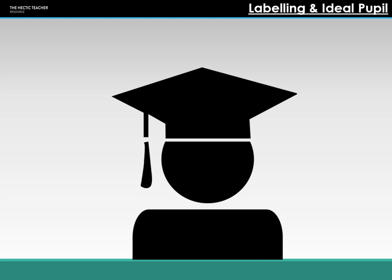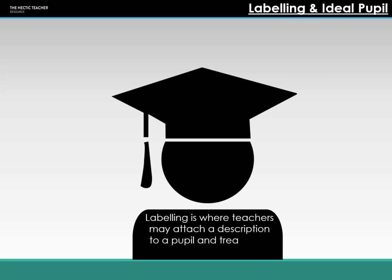There is a negative side to labelling as well, which can lead to students being anti-school. A negative label can be attached, and because of the treatment due to that label, it can lead to negative outcomes such as poor academic achievement, poor behaviour, or a negative experience of education. There are a number of different factors which play into the attachment of a label - it's not just one thing.